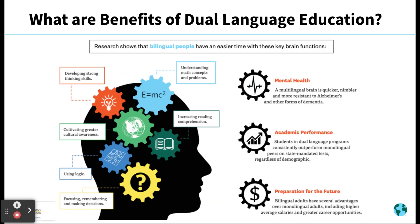The dual language immersion program in partnership with Participate Learning provides a unique and powerful opportunity to strengthen children's highest cognitive brain potentials through deliberate literacy development in two languages and authentic exposure to rich language experience. Research shows that bilingual people have an easier time with these key brain functions: developing strong thinking skills, cultivating greater cultural awareness, using logic, focusing, remembering and making decisions, understanding math concepts and problems, and increased reading comprehension.